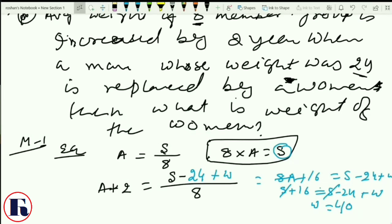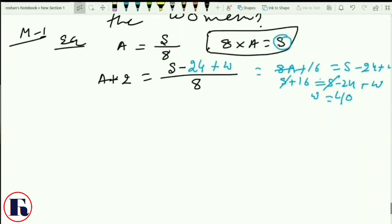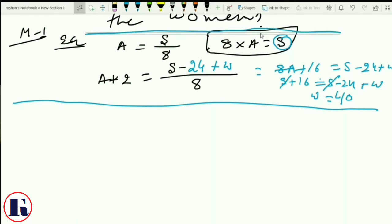A is equal to S, I can replace this 8A with S. So S plus 16 is equal to S minus 24 plus W. This S and S will cancel out, and W is equal to 24 plus 16, that is nothing but equal to 40. This was your normal method which everyone can follow. It looks easy, but the problem with this is that you have to take out your book and pen and use your book to solve. And I told before also, the more you write, the more time you take.